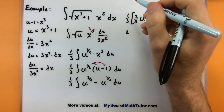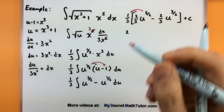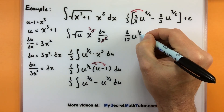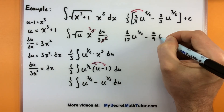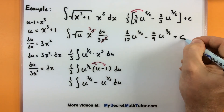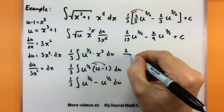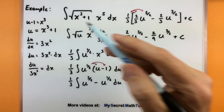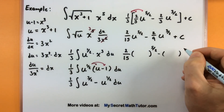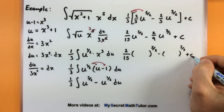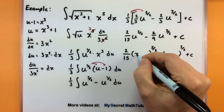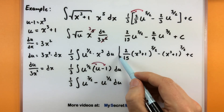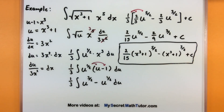Distributing through by that one-third so it's not sitting outside the brackets: we get two-fifteenths u to the five-halves minus two-ninths u to the three-halves plus constant. Almost done — in the home stretch. The last part is returning to our original variable. Replacing the u's with x cubed plus 1, we get the final antiderivative of our original problem.